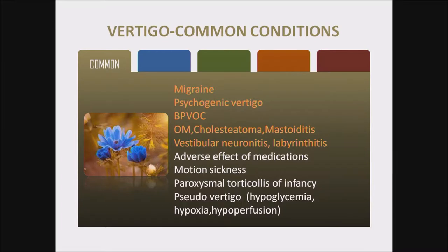Most common conditions seen in children: the conditions highlighted in orange in my practice are migraine, psychogenic vertigo, BPVOC, otitis media, cholesteatoma, mastoiditis, vestibular neuronitis, labyrinthitis, adverse effects of medications, motion sickness, paroxysmal torticollis of infancy, and pseudo-vertigo conditions like hypoglycemia, hypoxia, and hypoperfusion.